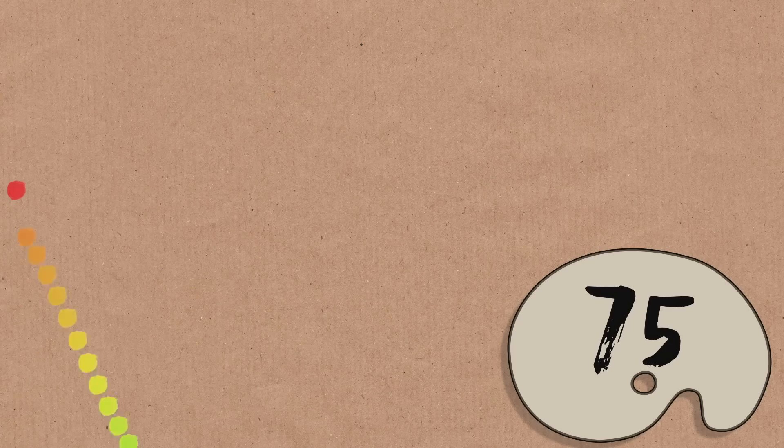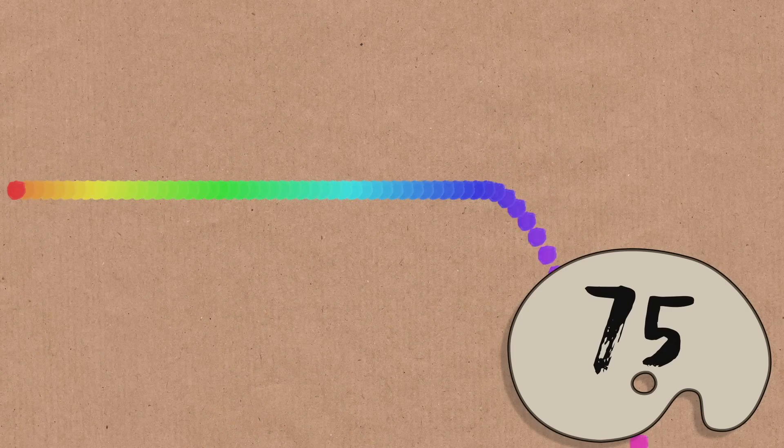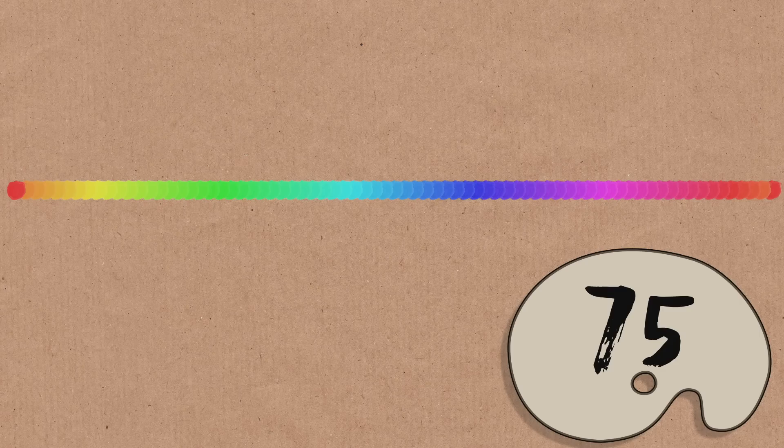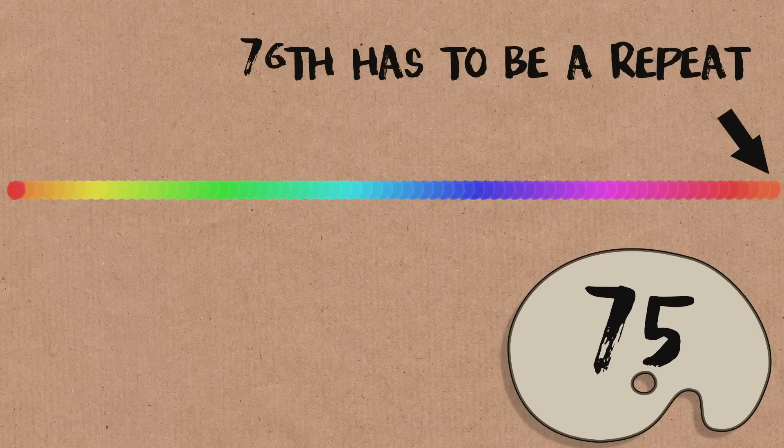As soon as you've got two things of the same color... So if the number of colors is 75, then as soon as you've colored 76 numbers, then by the famous result known as the pigeonhole principle, there must be two that are the same color. And having two of the same color is the same as having an arithmetic progression of length two.